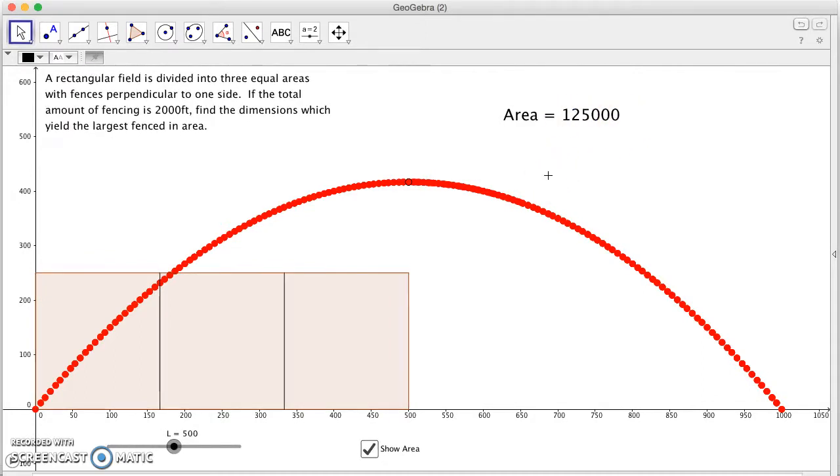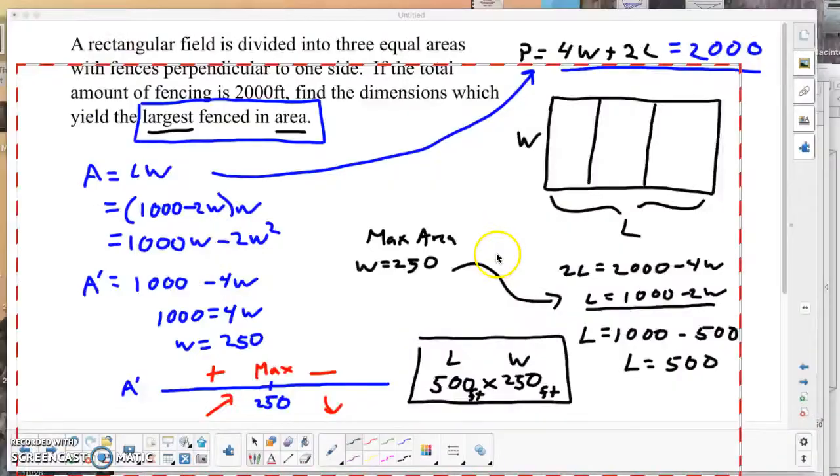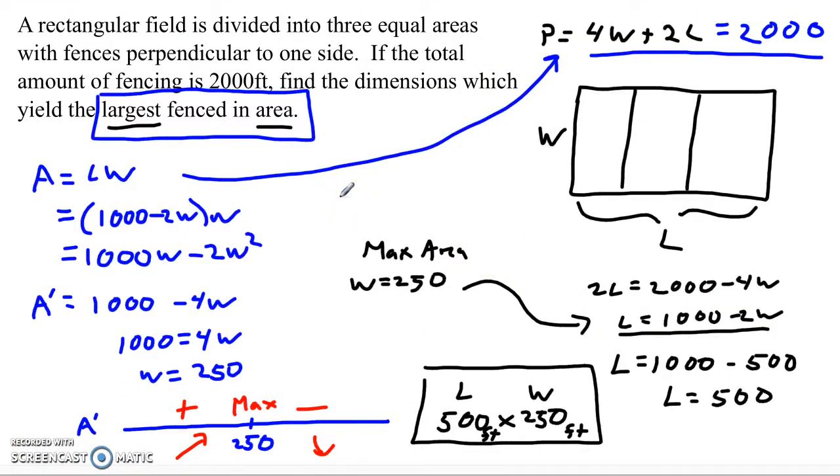That would have been a perfectly good way to answer the question, too. They could have asked you find the maximum area, not the dimensions. So that's a pretty simple and standard area optimization question.